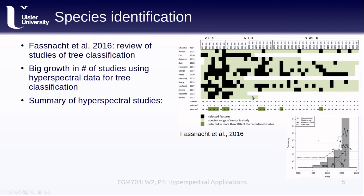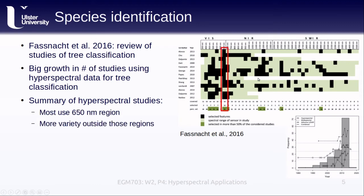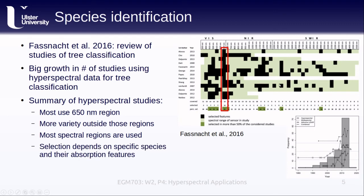We can see here a number of studies that used other visible wavelengths, though not all, and a number of studies that used wavelengths around 1,100 to 1,200 nanometers in the near-infrared, and even all the way out to the short-wave infrared. In all, most of the visible, near-infrared, and short-wave infrared regions are used in at least one or two studies. Like we've seen previously, the particular selection of wavelengths is going to depend on the specific species being studied and the relevant absorption features in their spectral signatures. There's not really a one-size-fits-all approach to be found.